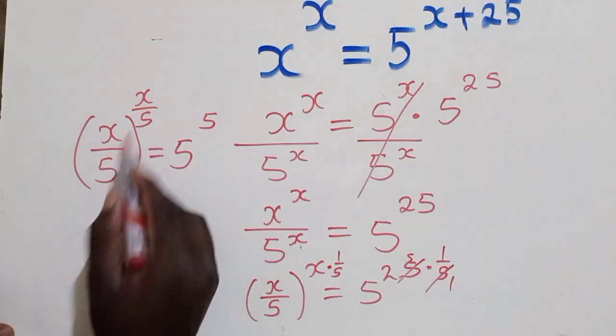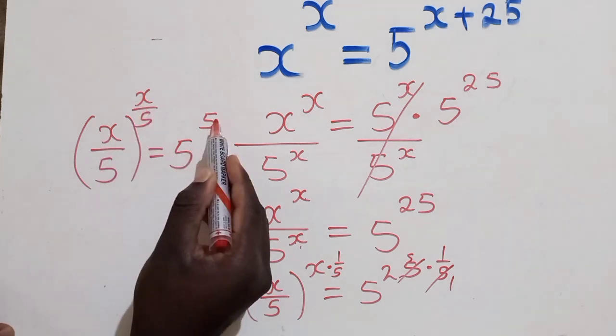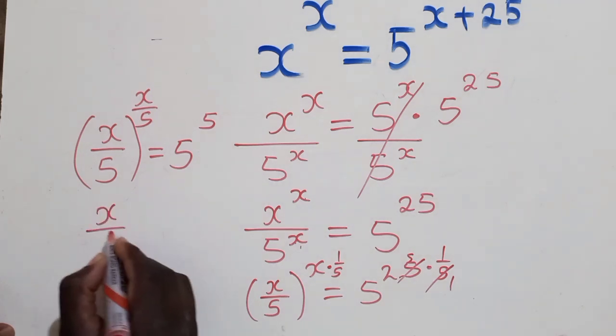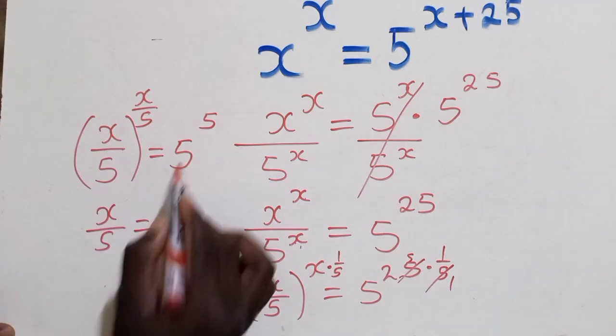You can see the laws of indices, we've got the same base as the power, even this side, base equal to the power. So we shall say x over 5 is equal to a 5. We just get this equal to this.